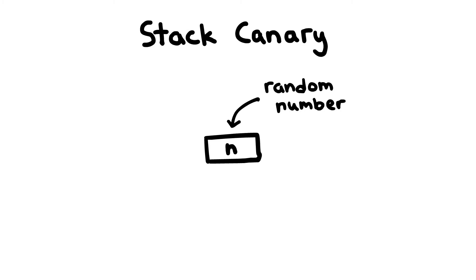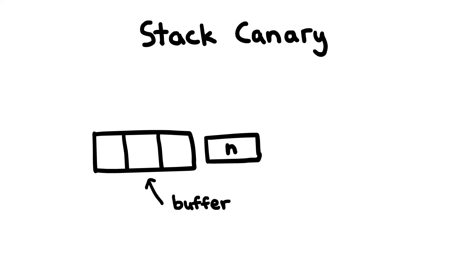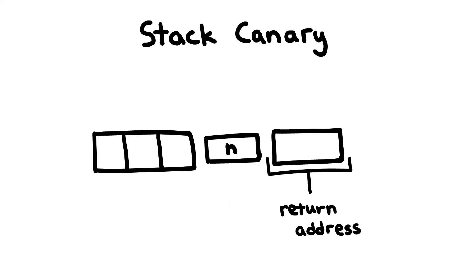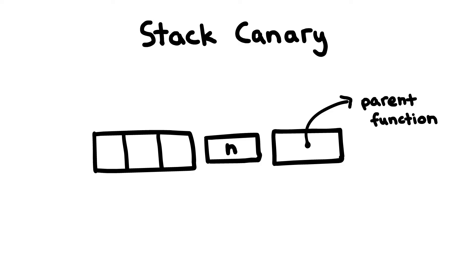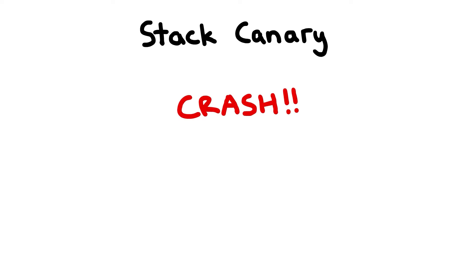A stack canary is just a randomly chosen number that sits between any buffers and the return address of the function. When the function is ready to return, before we jump to the return address, the canary is checked to make sure it's the same original value. If it's not the same value, then the program will crash and no more code will be executed.